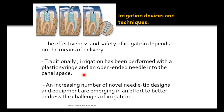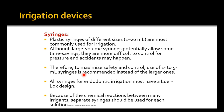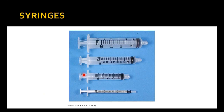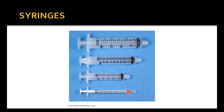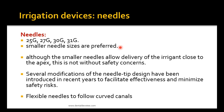Traditionally, irrigation has been performed with a plastic syringe and an open-ended needle into the canal space. An increasing number of novel needle tip designs and equipment are emerging to better address the challenges of irrigation. Irrigation devices include plastic syringes of different sizes (1 to 20 ml). Although large syringes potentially allow time savings, they are more difficult to control, so 1 to 5 ml syringes are recommended. All syringes for endodontic irrigation must have a Luer-lock design so the needle doesn't come off easily when pressure is applied.